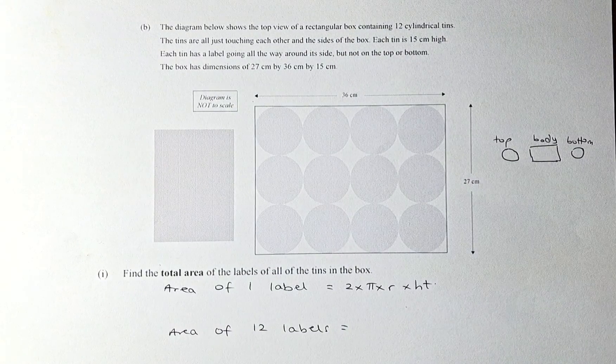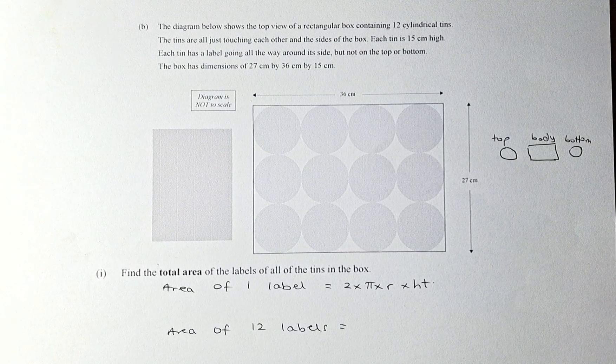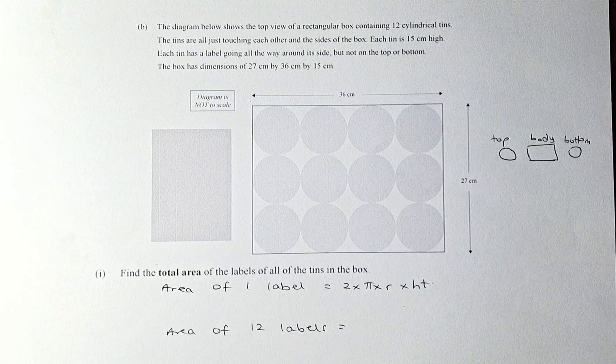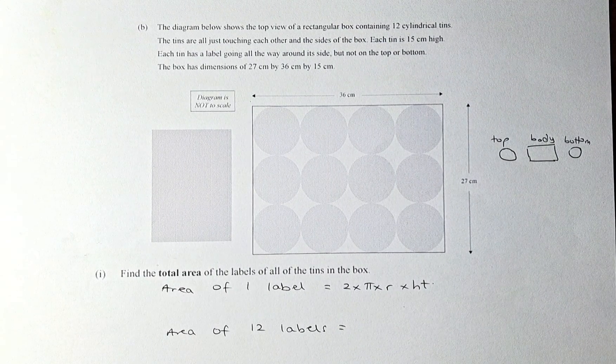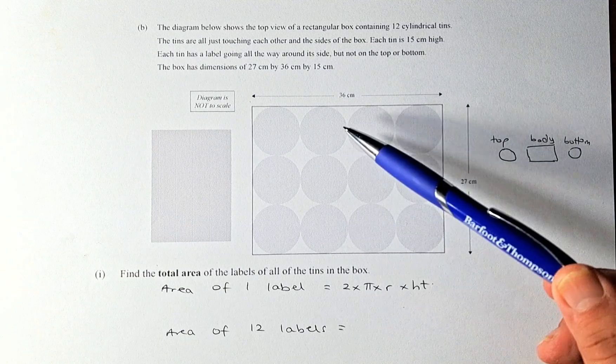So the first part of question 1b - we shall read the question together. The diagram below shows the top view of a rectangular box containing 12 cylindrical tins. The tins are all just touching each other.